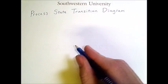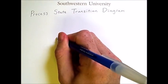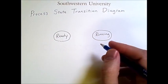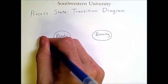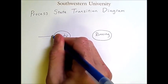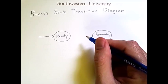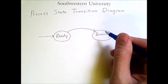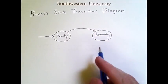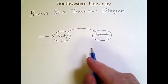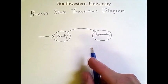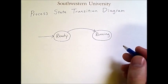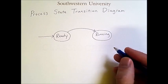The simplest model would have a ready state and a running state. In this model, new processes enter the system in a ready state, and then the operating system picks a ready process to transition into the running state. This simple model applies to very old operating systems that only had a single processor, so only one process would be in the running state at a time. In modern systems, we have multiple CPUs and therefore can have multiple running processes.